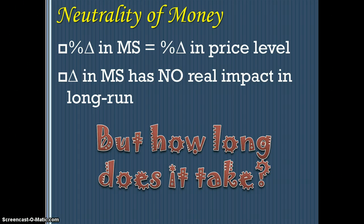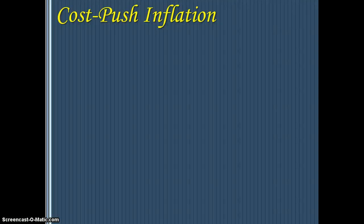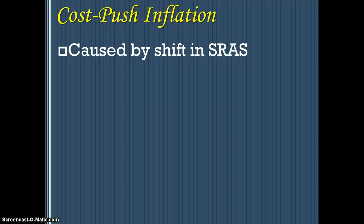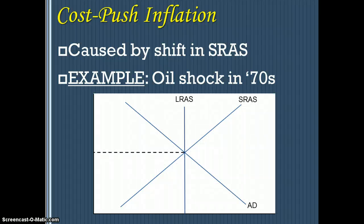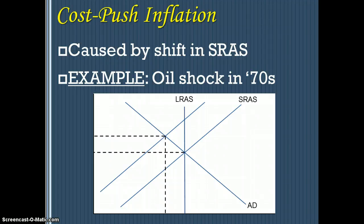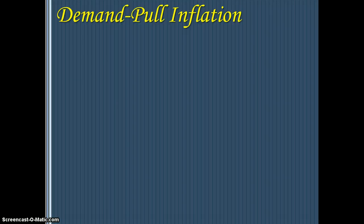There are two different types of inflation you should know about. One is caused by a change in aggregate supply, known as cost-push inflation — this is the stagflation we talked about earlier, like the oil shock of the 1970s, where oil became more expensive and other commodity prices rose. We saw a left shift in aggregate supply, which led to less output and higher prices. There's not a whole lot the government can do about cost-push inflation.